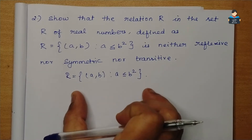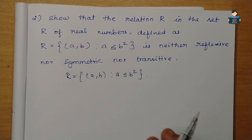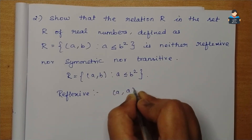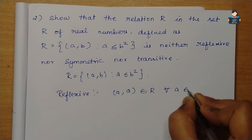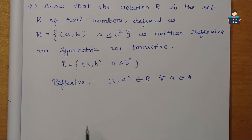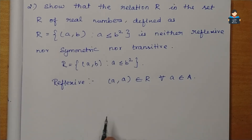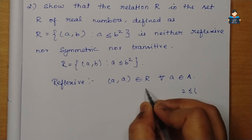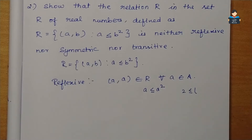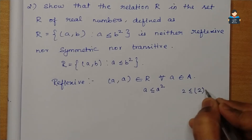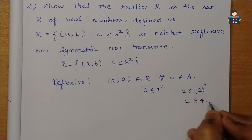Now we can check reflexive, symmetric, and transitive one by one. For the reflexive condition, we need (a,a) ∈ R for all a belonging to the set. The set given is real numbers, and the condition is a ≤ a². Let's substitute a = 2: we get 2 ≤ 2² = 4, which is true. But we need to check for all real numbers.